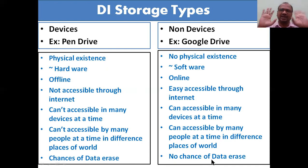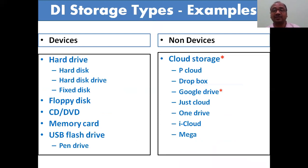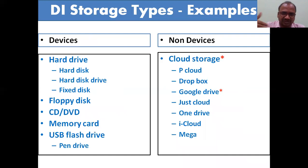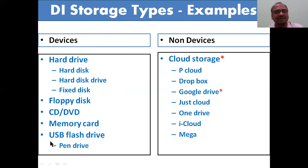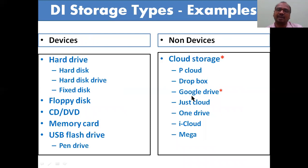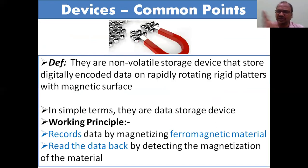There are chances of data errors in a pen drive, but with Google Drive there is no chance of data errors. Examples of devices: hard drive, floppy disk, CD, DVD, memory card, USB flash drive, pen drive. Non-devices - cloud storage - very important: pCloud, Dropbox, Google Drive, Box, OneDrive, iCloud, MEGA, and many others. Mainly Google Drive is important.